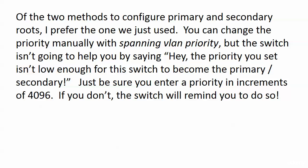Personally, when it comes to configuring our primary and secondary roots, I prefer the method we just used, using the root primary and root secondary commands. But you can change the priority manually with the spanning-tree VLAN priority command. We're going to do it in just a moment. The switch isn't going to help you by saying the priority you entered isn't low enough for the switch to be the primary or secondary, so you have to know the priorities of the other switches involved to get the results that you want.